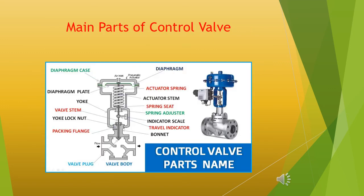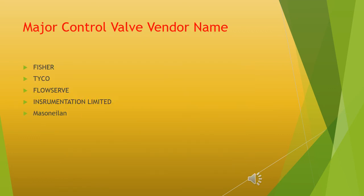Main parts of a control valve: valve body, bonnet, stem, plug, packing, flange, actuator, positioner, etc. Major control valve vendors include: Fisher, Tyco, Flowserve, Instrumentation Limited, Masoneilan, and Samson.